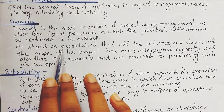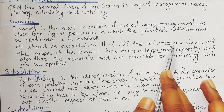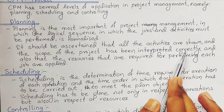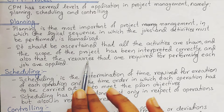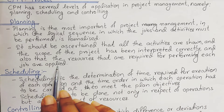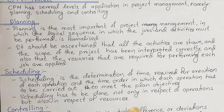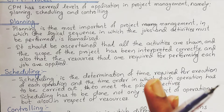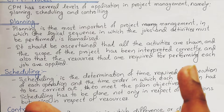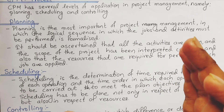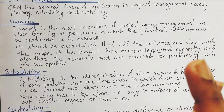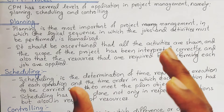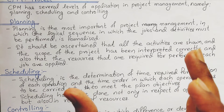During planning, it should be ascertained that all the activities are shown and the scope of the project has been interpreted correctly. Also, the resources required for performing each job must be identified — there should be sufficient resources and a prior idea about what kind of resources are required, and whether those resources are available at the site.